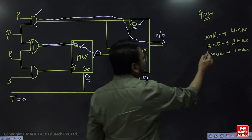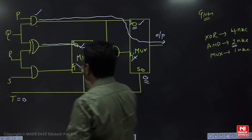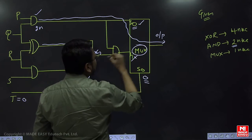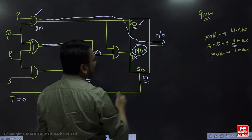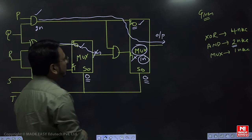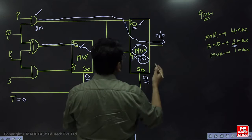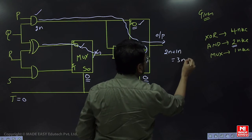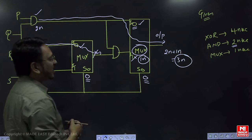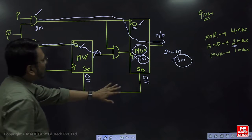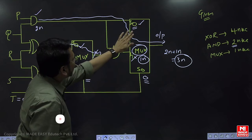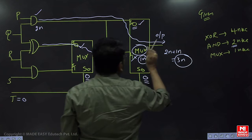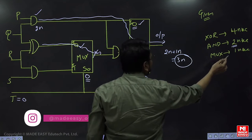For t=0, the AND gate delay is given as two nanoseconds and the multiplexer delay is one nanosecond. So two plus one gives us three nanoseconds total delay for the t=0 case. When it is zero, the AND gate operates and gives two nanoseconds, and the MUX adds one nanosecond, making three nanoseconds overall.